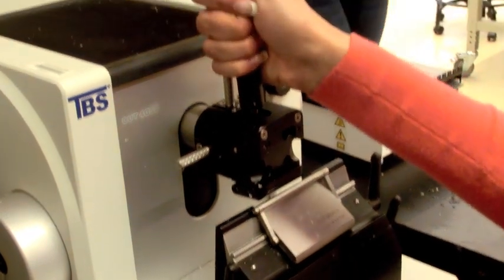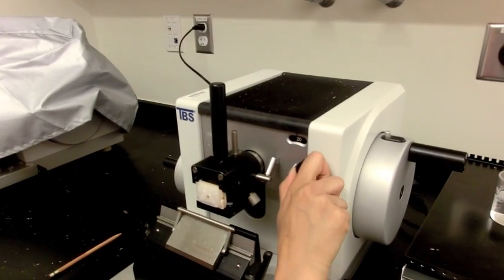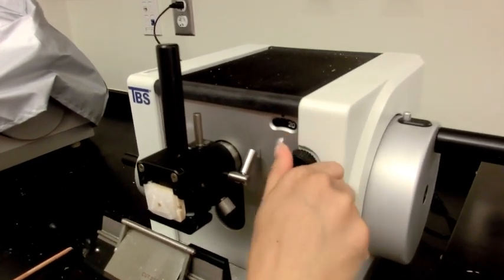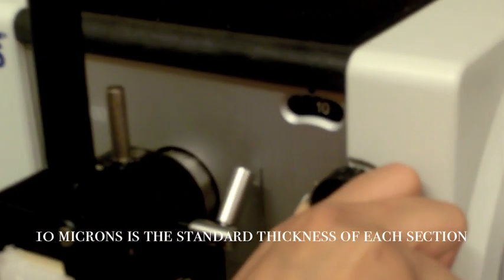When you are ready to section the paraffin embedded organ, place the paraffin cartridge in the microtome while pulling the main handle toward you. Use the knob on the right to adjust the section thickness required for your sectioning, approximately 10 microns.